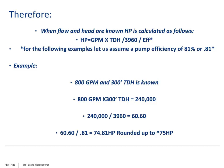Let us look at a straightforward example. We are given the system requirements of 800 gallons per minute and a total dynamic head of 300 feet of head. Remember, we will be using an efficiency of 81%.